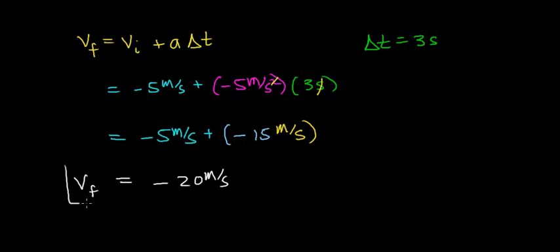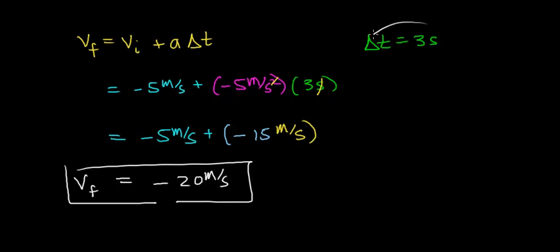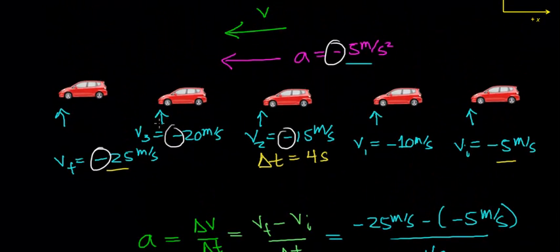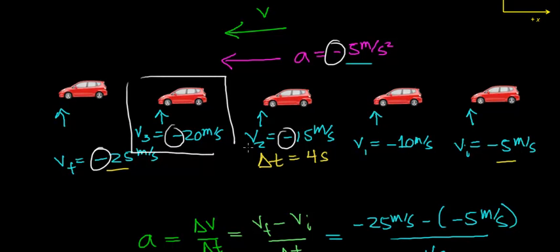So the velocity after this car accelerates for 3 seconds is negative 20 meters per second. If we go back to our motion diagram, the velocity after 3 seconds also worked out to be negative 20 meters per second. We now have two different ways to find the velocity of an object after some interval of time has elapsed.